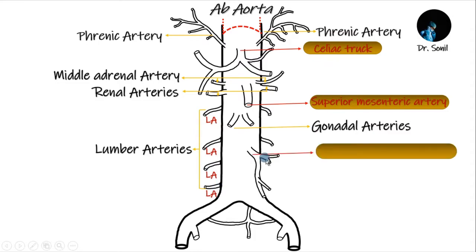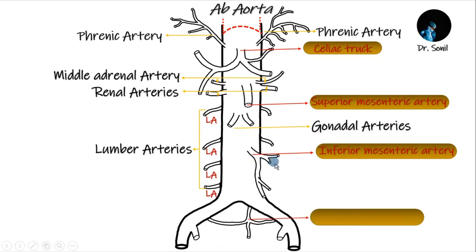Inferior mesenteric artery, starting from L3, at its large anterior branch. The medial sacral artery, starting from L4, is an artery arising from the midline of the aorta at its lowest part.